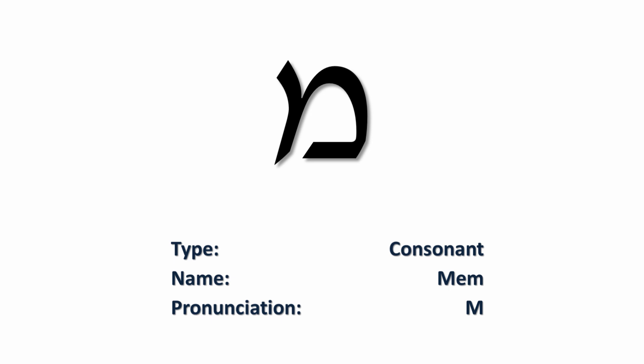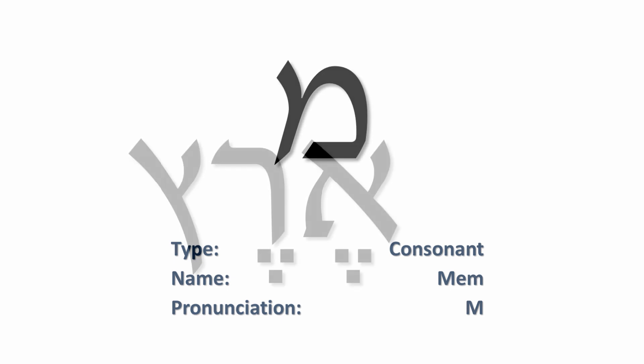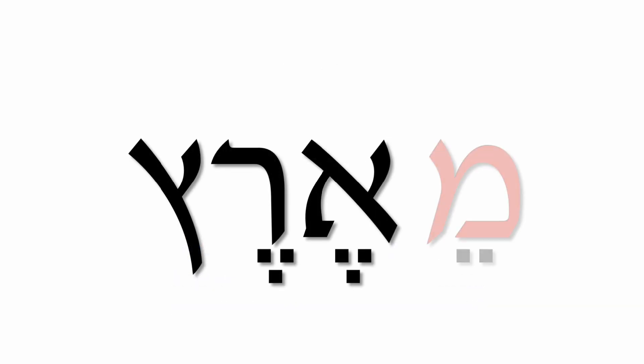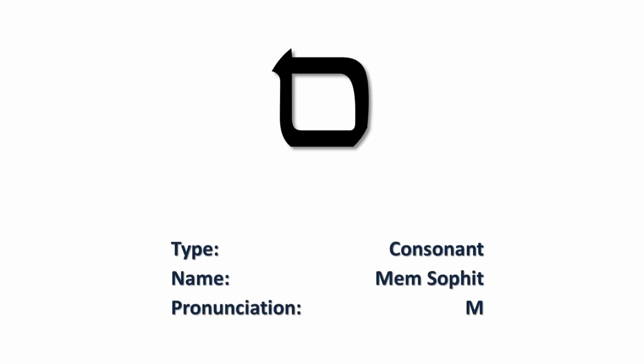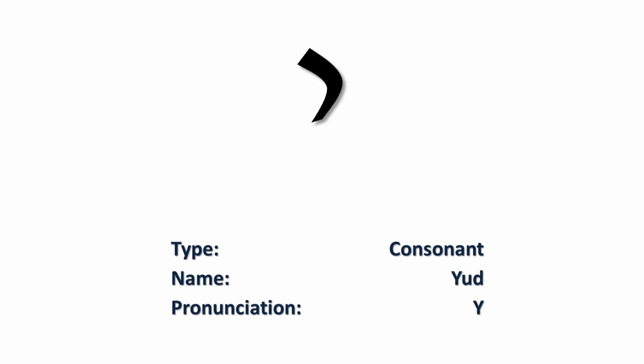This is the letter mem, which has an 'm' sound. If we place the letter mem in front of the word eretz, we have me'eretz, which means 'from a land.' The letter mem is frequently used in Hebrew as a prefix meaning 'from.' The mem also has two different forms — if it appears at the very end of a word, it takes on a different form called the mem sophit, or the final mem.